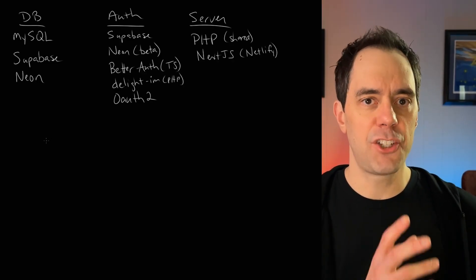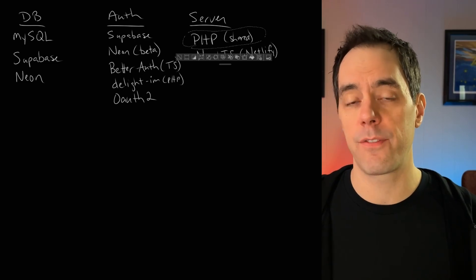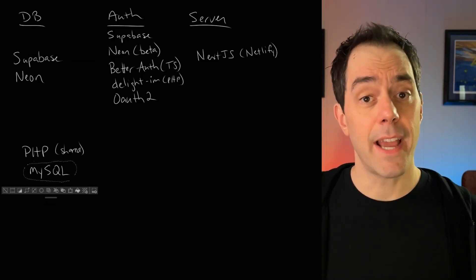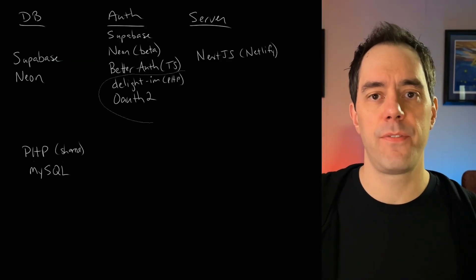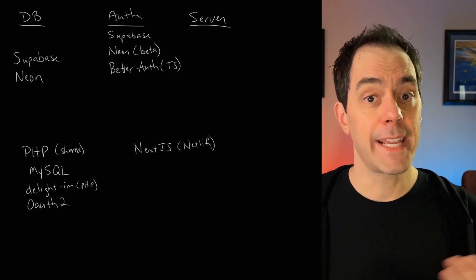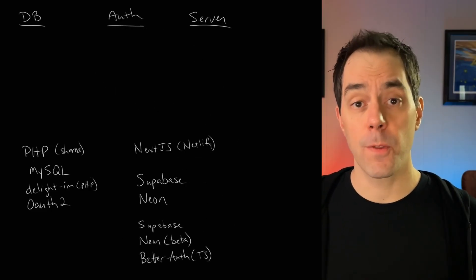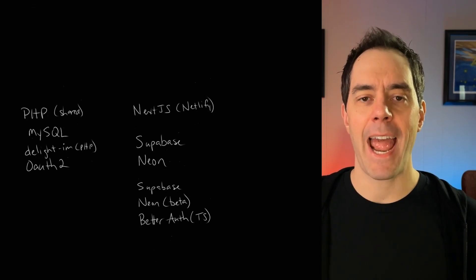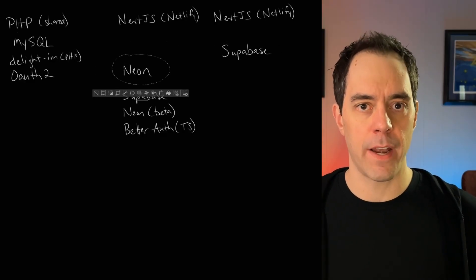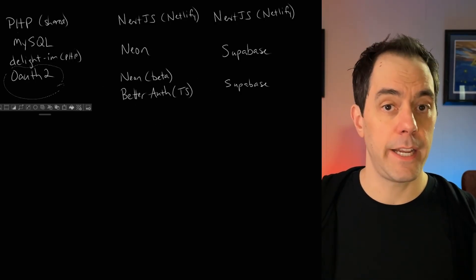I can consider each group independently to figure out the pros and cons. The first group is PHP, using my shared hosting site for the server, MySQL for the database, and either Delight.im or Cognito for authentication. The second group is Next.js, where I'll need to figure out a hosting platform like Vercel or Netlify. The database will be either Neon or Supabase, and authentication will be either Supabase, Neon's beta features, BetterAuth, or AWS Cognito. I can further divide this into two stacks: Next.js with Supabase and its built-in auth, or Next.js with Neon and either the beta features, Cognito, or BetterAuth.